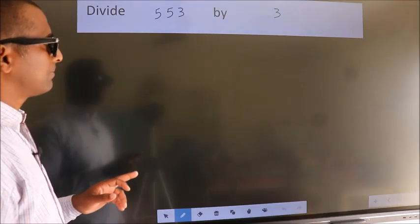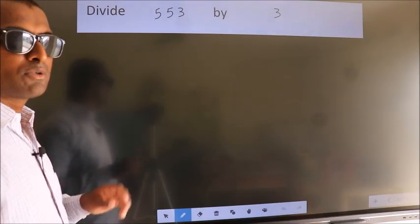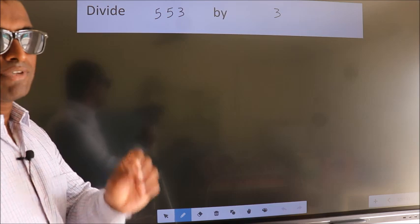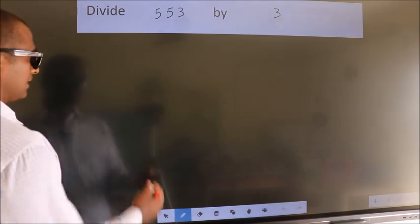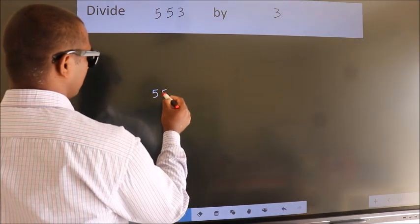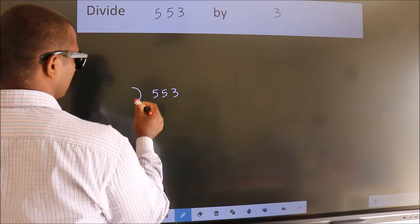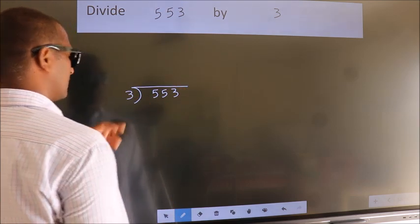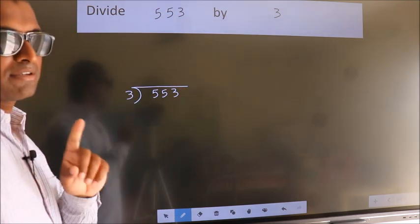Divide 553 by 3. To do this division, we should frame it in this way. 553 here, 3 here. This is your step 1.